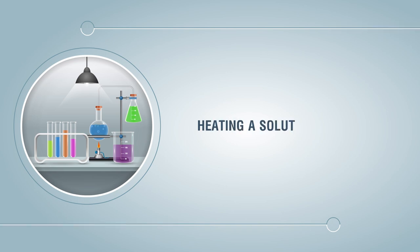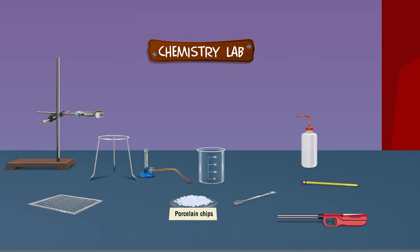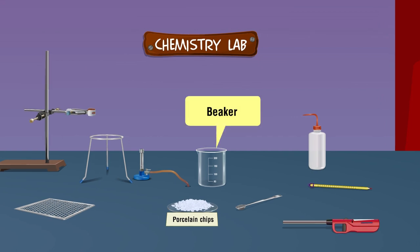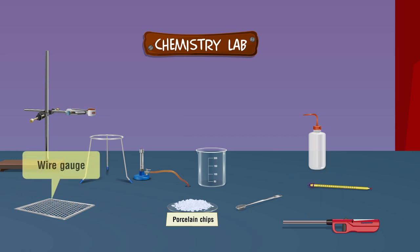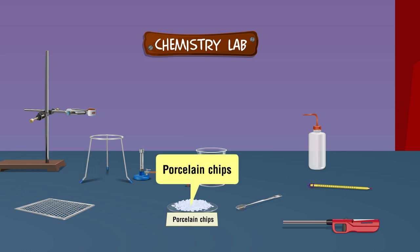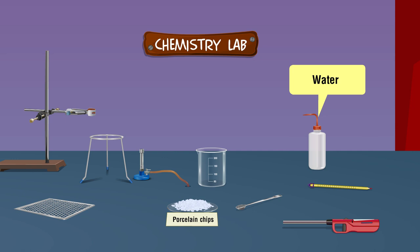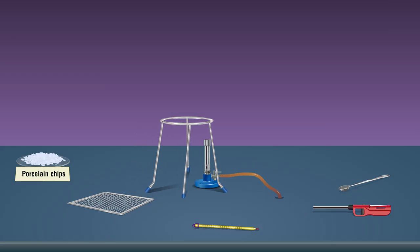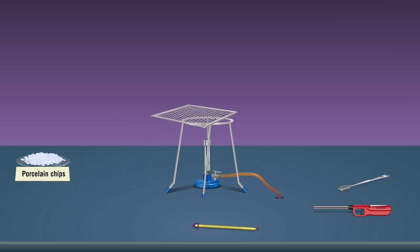Heating a solution in a beaker. Materials required: beaker, tripod stand, burner, lighter, wire gauze, porcelain chips, water in wash bottle, thermometer, laboratory stand, and spatula. Procedure: Place a tripod stand on top of the burner. Place the wire gauze